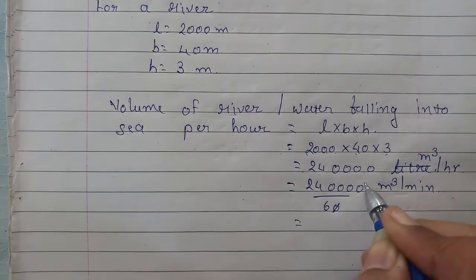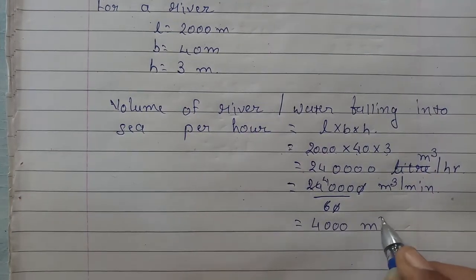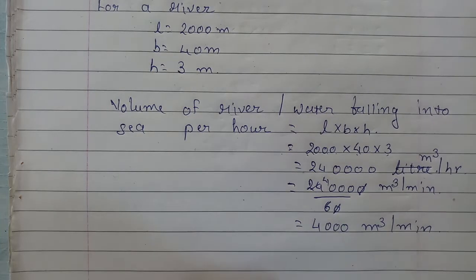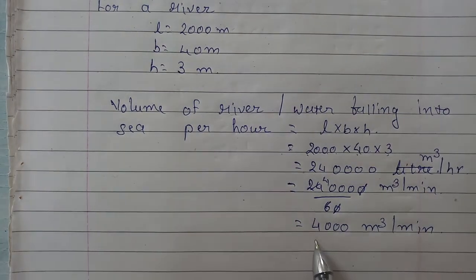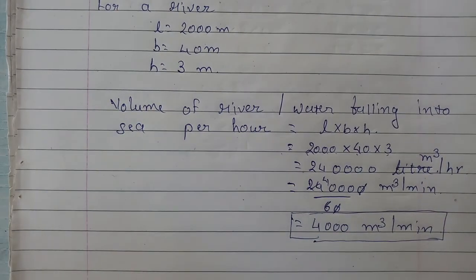So this becomes 00 cut. 6, 4's are 24. So that is 4,000 meter cube per minute. That means this much water per minute is entering into the ocean.